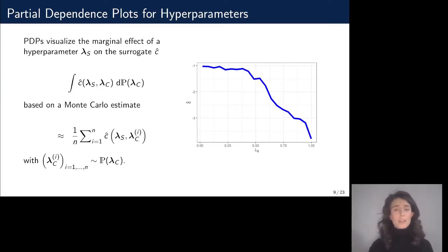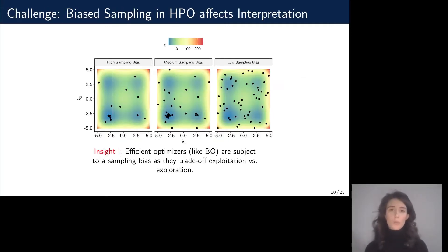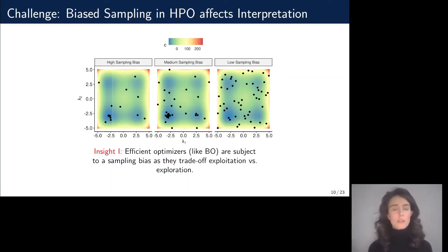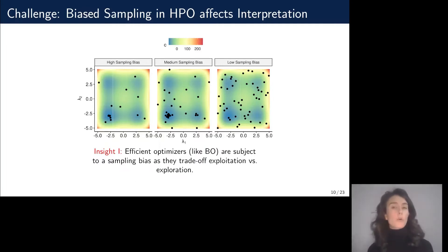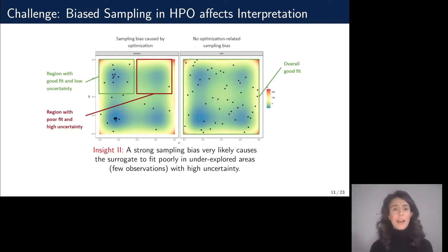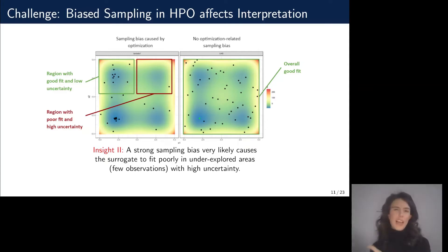Coming back to hyperparameter optimization, we have one problem: the efficient optimizers within an AutoML system are subject to a sampling bias. The data generated by an AutoML system is usually heavily biased towards regions of the search space where performance values are quite good, because we are trying to find the optimum as efficiently as possible. Therefore, since the surrogate model is built on exactly that data, it will have a good fit in regions where we sampled a lot and a poor fit in other regions where we didn't sample much.